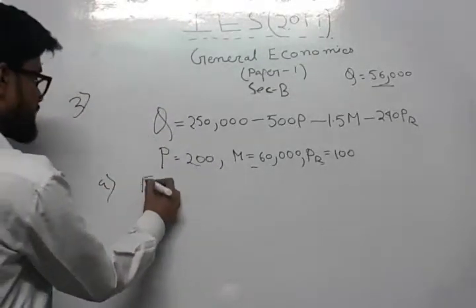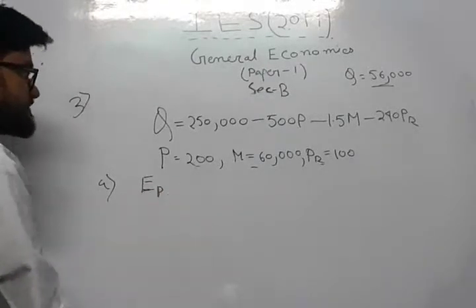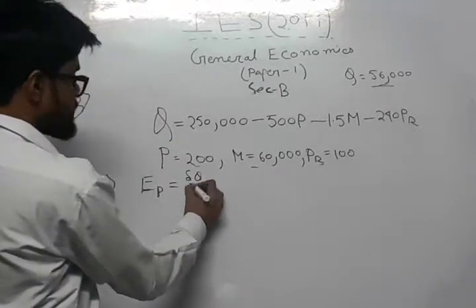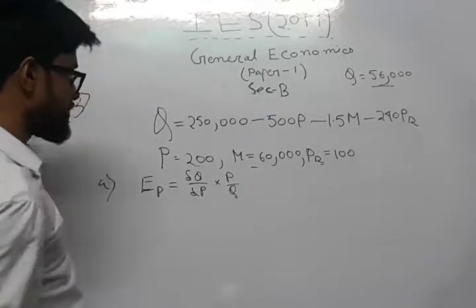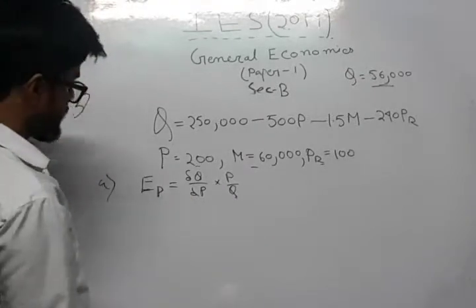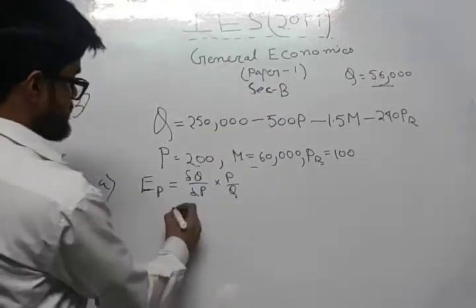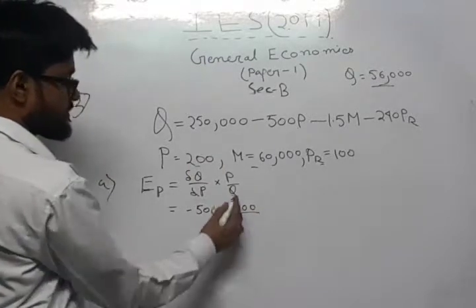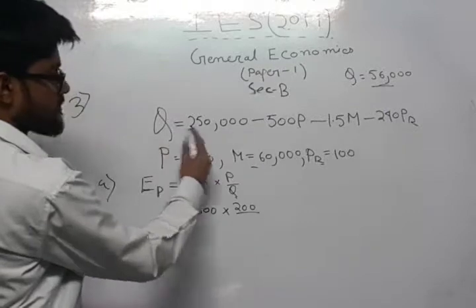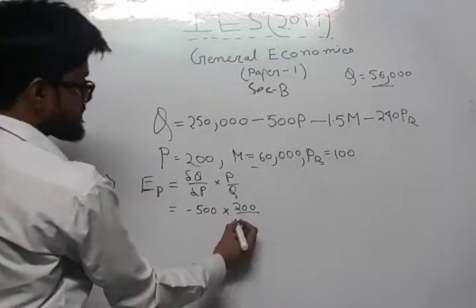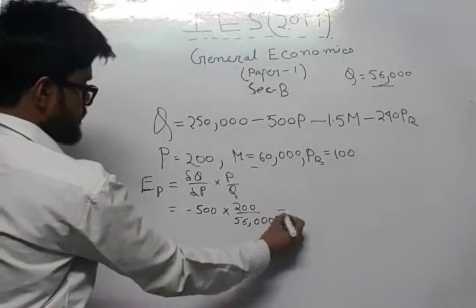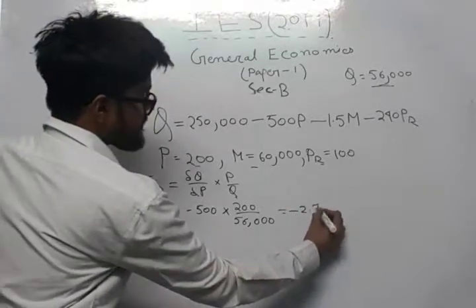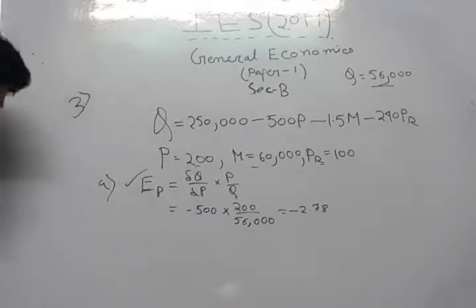The first part asks us to find EP, the price elasticity of demand. The price elasticity formula is: change in Q by change in P, multiplied by P by Q. Differentiating with respect to P gives minus 500. With P = 200 and Q = 56,000, we get EP equals minus 1.79.